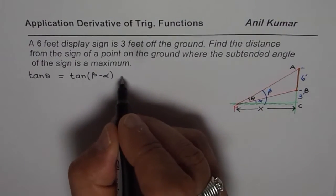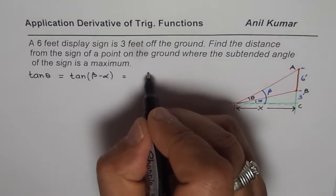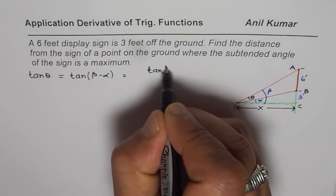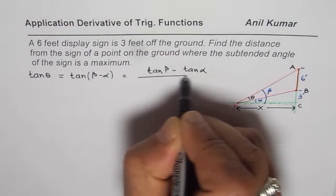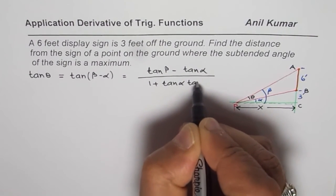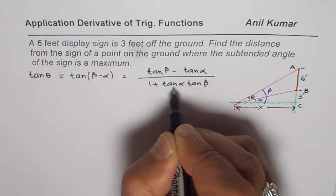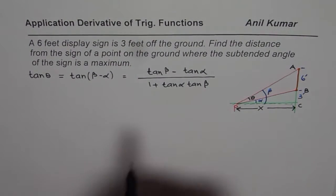Now, if you remember the trigonometric formula, what is tan beta minus alpha? That is tan beta minus tan alpha divided by 1 plus tan alpha tan beta, right? So you could have written beta or alpha, the order does not matter here, okay? So that is the first part.